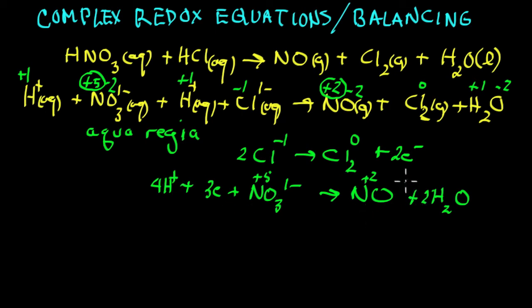So we've got the atoms balanced, but we don't have the electrons. If we multiply this top by three and the bottom equation by two, we will balance the electrons.